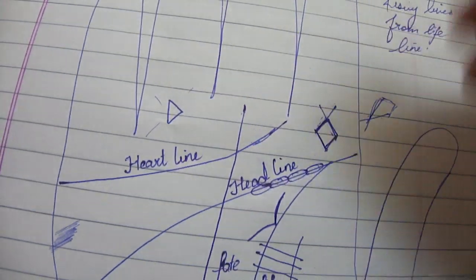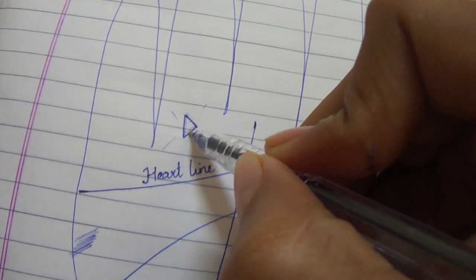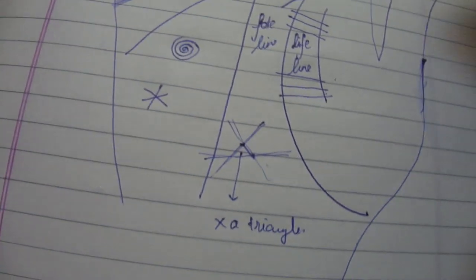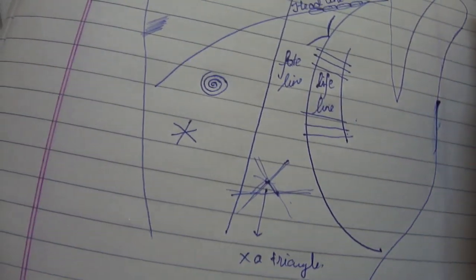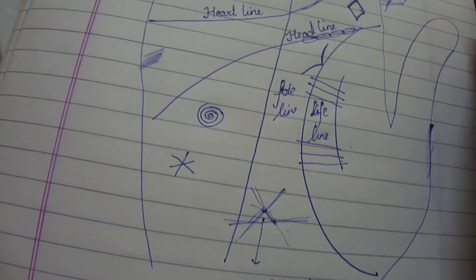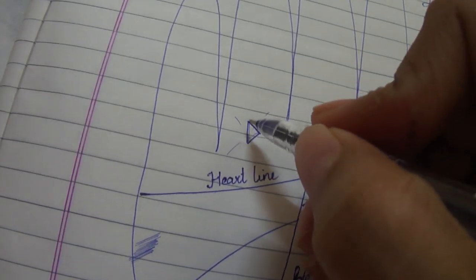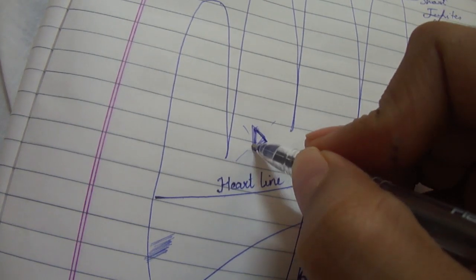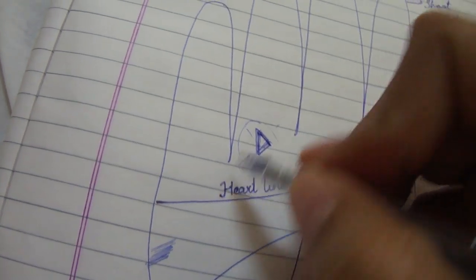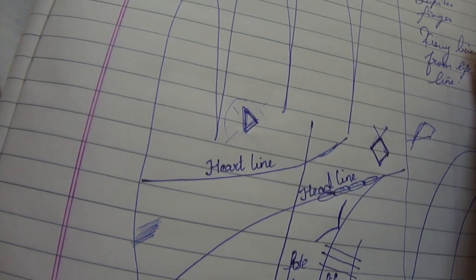I would like to clarify one more thing: the triangle we talk about has to be an independent triangle. If it is randomly formed — meaning lines were just cutting across and you happened to find a triangle — that will not have that much power or meaning. More meaning is relevant if the triangle is very independent, found in an independent fashion, and then it tends to be slightly more meaningful.